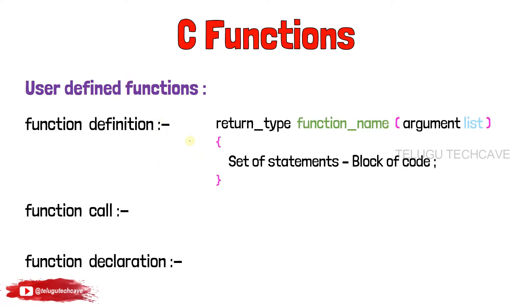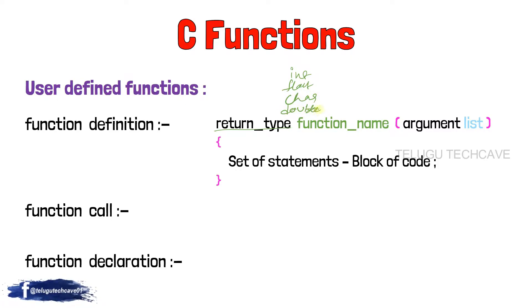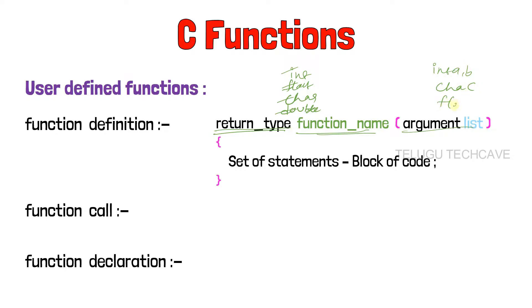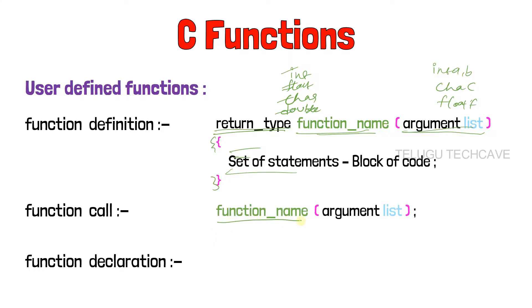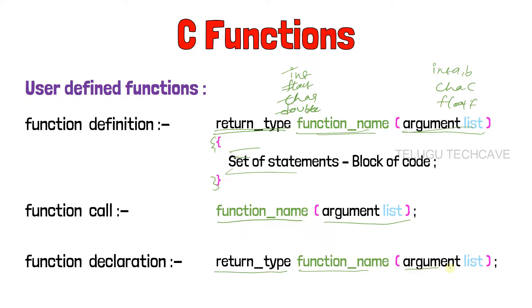Now let's talk about syntax. We write a function in the following format. First, return type — which is int, float, char, or double. We write the function with a data type. Next, function name — we declare the function name. Next, argument list — we declare variables with their data type, for example: int a, b, c. Next, open brackets to declare the code inside. For calling a function, the syntax is: function name, then argument list. For function declaration syntax: return type, then argument list.